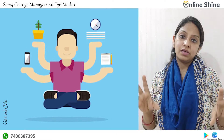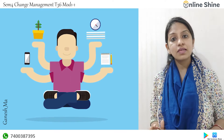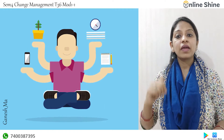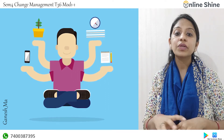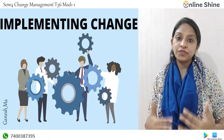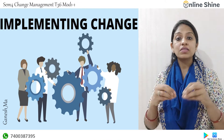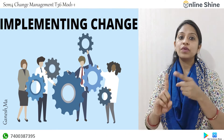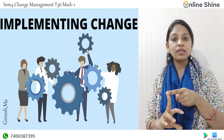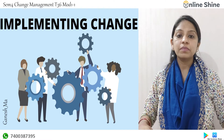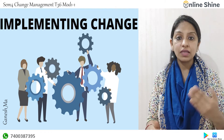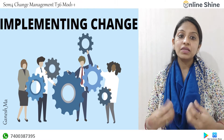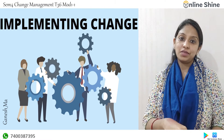Fourth is Ability — the ability to implement new skills. For example, many employees have been working the traditional way for years, and now new technology has come. Ability refers to how much they are able to implement that new technology in their work. Fifth is Reinforcement — to cement the change. Once you have implemented the change using awareness, desire, knowledge, and ability, reinforcement ensures those changes are permanent and lasting.